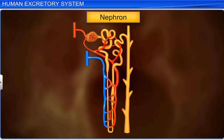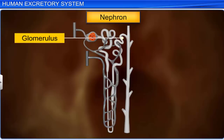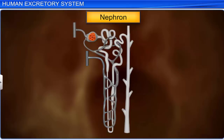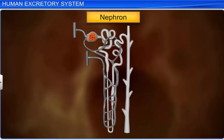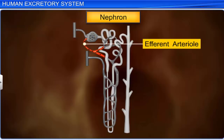Each nephron has two parts: the glomerulus and the renal tubule. The glomerulus is a ball-shaped network of capillaries formed by the afferent arteriole, which is a fine branch of the renal artery. It performs the first step in filtering blood. The filtered blood from the glomerulus exits through the efferent arteriole.